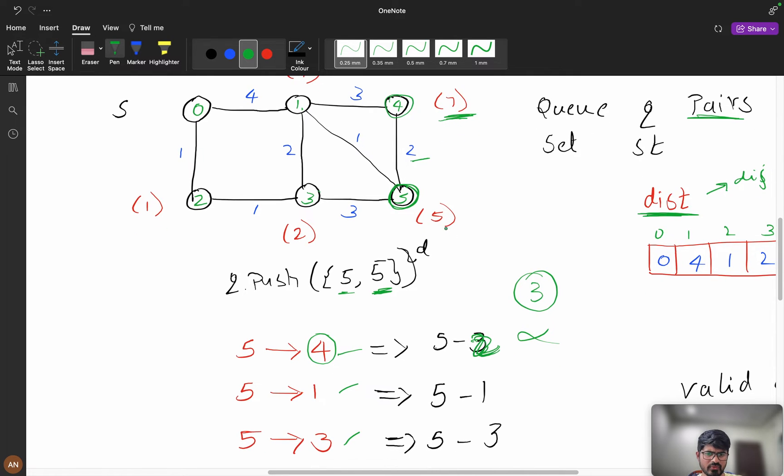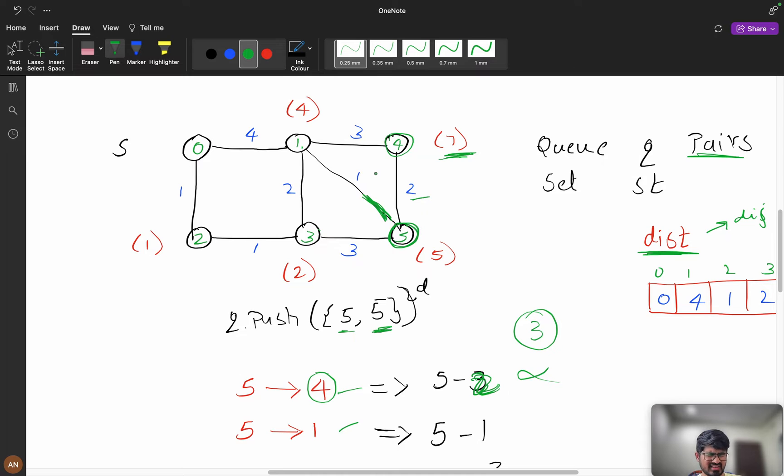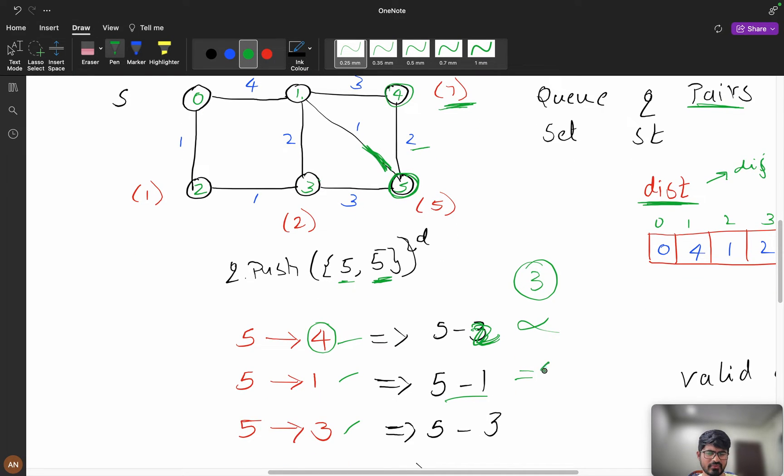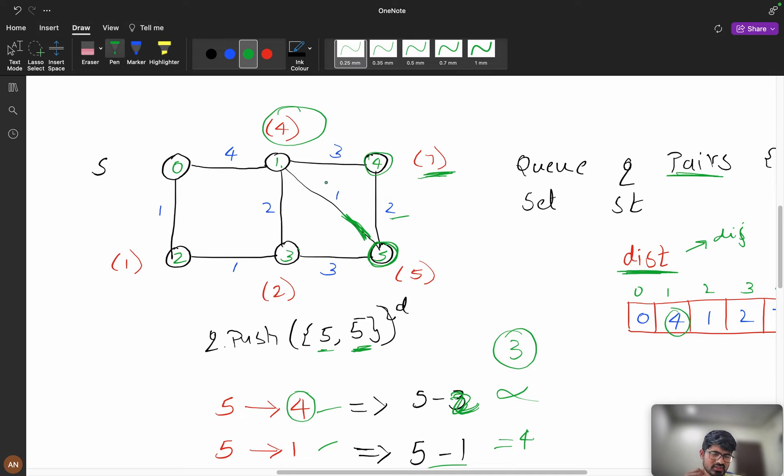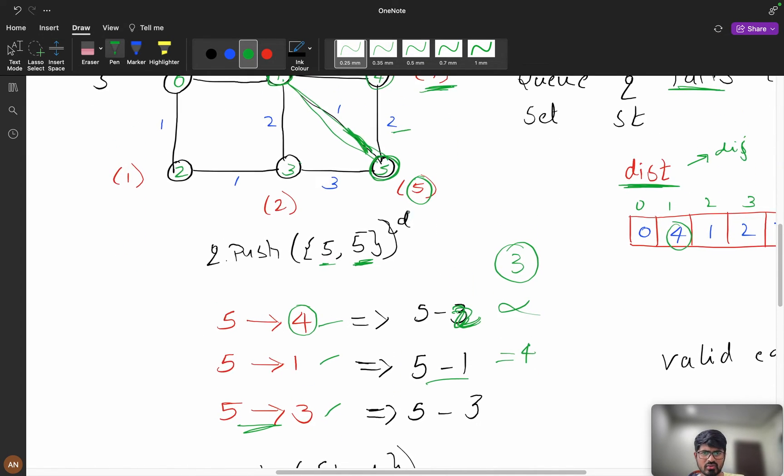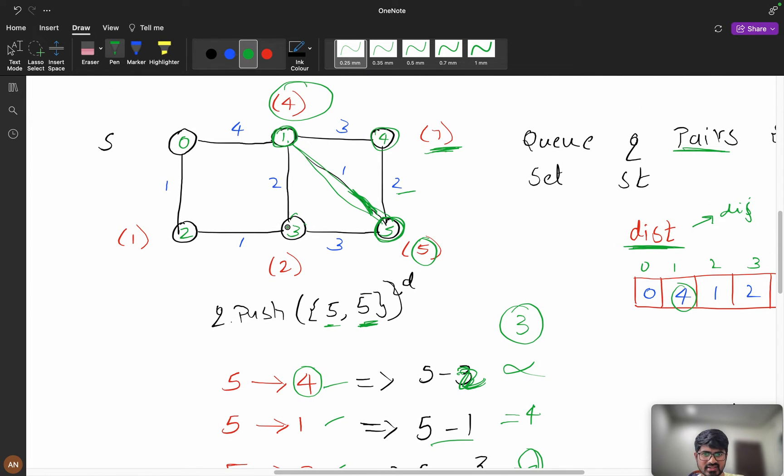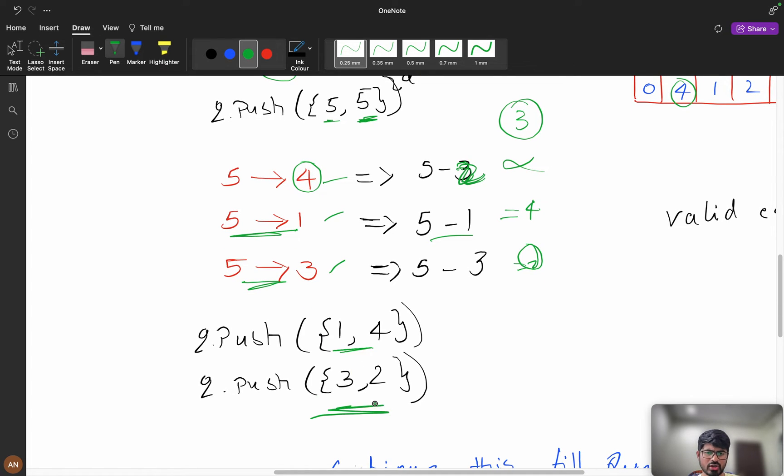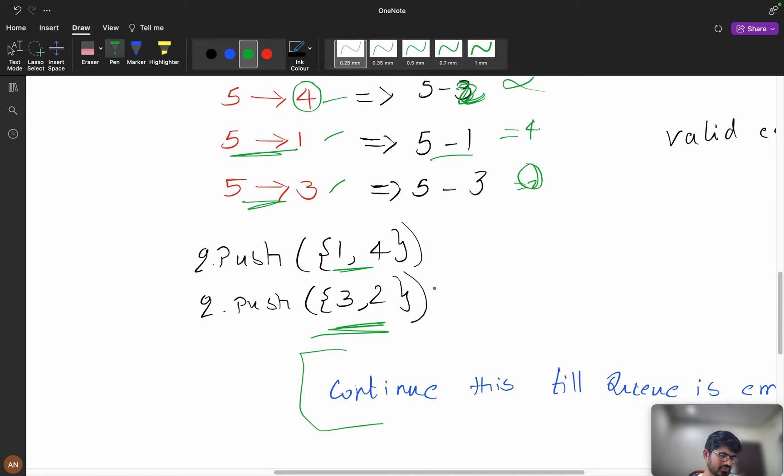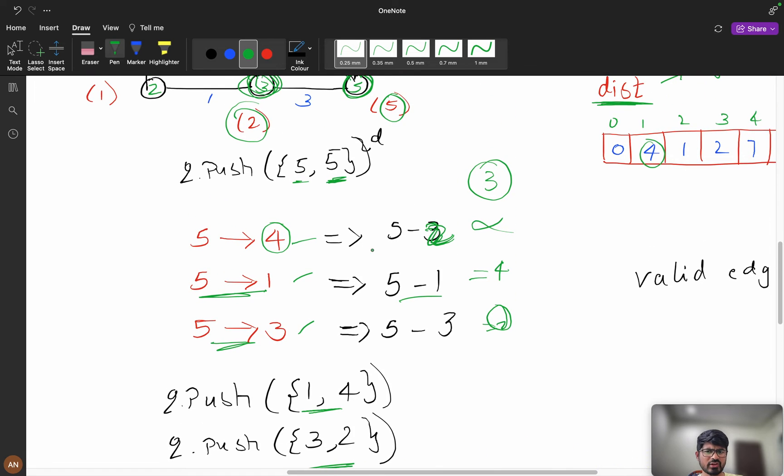Let us ignore this. Now 5 to 1. 5 to 1. Now we have 5 and this edge length weight is 1. So 5 minus 1 which will be 4, and at index 1 I have 4. To reach 1, my minimum cost is 4. So I can say yes, this is my valid index because to reach this I required 5, to reach this I required 4. That means this should be in my shortest path only. Now let us consider 5 to 3. Now 5 minus 3 which is 2, and to reach 3, minimum distance I need to travel is 2. Yes, definitely 3 can be in my path. Yes, 3 can be in my path. So what I will do is I will push q dot push 1 comma 4 and q dot push 3 comma 2, and we will continue this. We will continue till the final iteration until the queue is not empty.